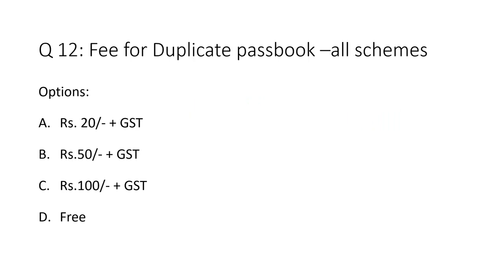Question 12: Fee for duplicate passbook — all schemes. Option A: rupees 20 plus GST. Option B: rupees 50 plus GST. Option C: rupees 100 plus GST. Option D: free. The correct answer is Option B — rupees 50 plus GST. Note: duplicate passbook fees are applicable for all schemes.